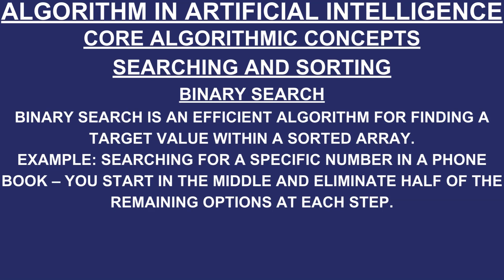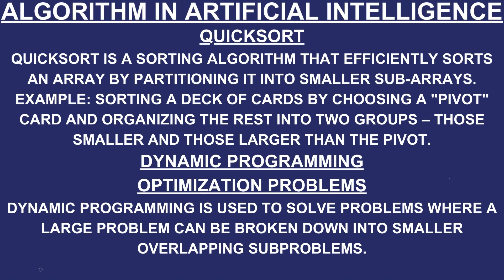Core algorithmic concepts — searching and sorting. Binary search is an efficient algorithm for finding a target value within a sorted array. For example, searching for a specific number in a phone book: you start in the middle and eliminate half of the remaining options at each step. Quicksort is a sorting algorithm that efficiently sorts an array by partitioning it into smaller sub-arrays. For example, sorting a deck of cards by choosing a pivot card and organizing the rest into two groups.